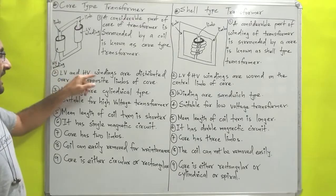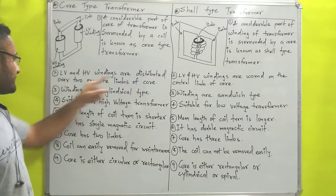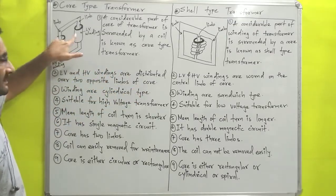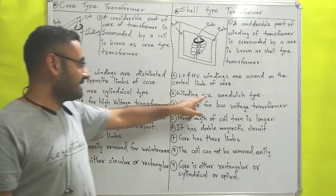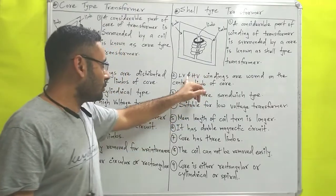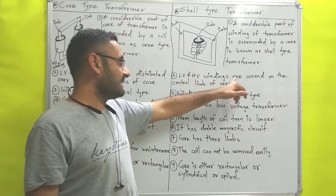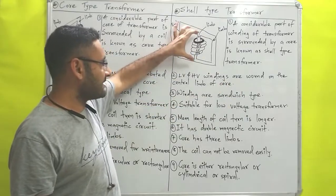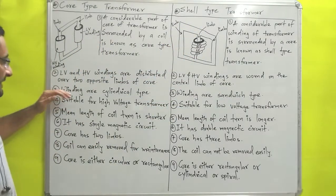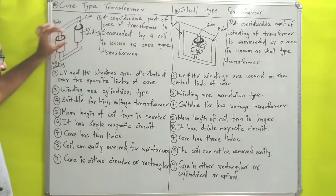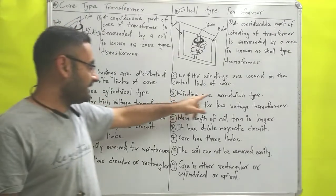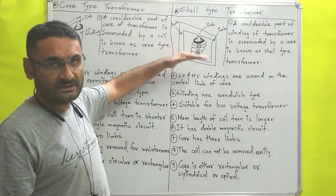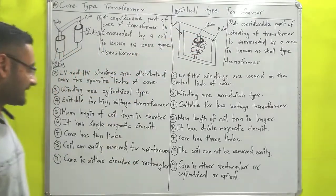The next difference is that in the core type, the low voltage and high voltage windings are distributed over two opposite limbs of the core, as you can see from the figure. In the shell type, the low voltage and high voltage windings are wound on the central limb of the core. The windings in core type are cylindrical type, while in shell type the windings are sandwiched — one after another: low voltage, high voltage, low voltage, high voltage.